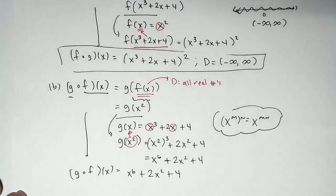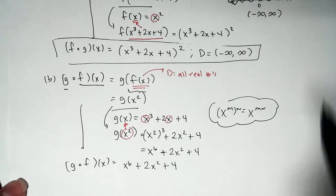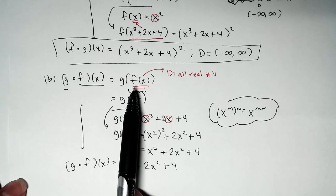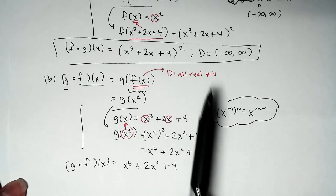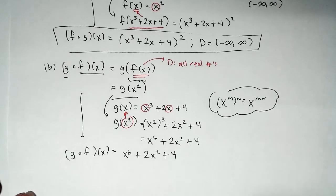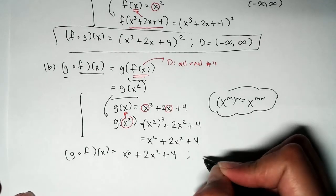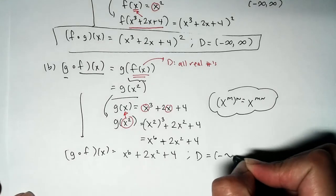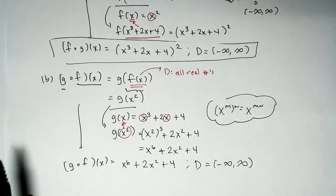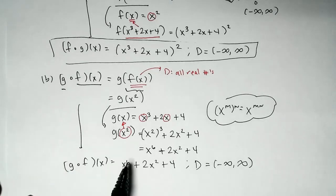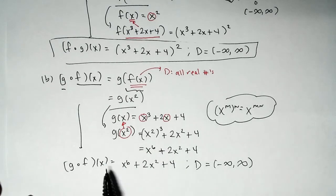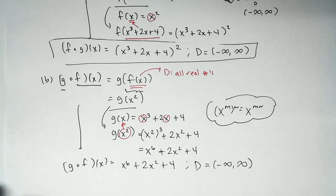The domain of the inside function F is the set of all real numbers. Since X to the 6th plus 2X squared plus 4 is a polynomial, the domain of G of F of X is also the set of all real numbers. The reason I had you find the composite function both forwards and backwards is to highlight that we don't necessarily get the same answer — F of G of X is not the same as G of F of X. Thanks, guys.